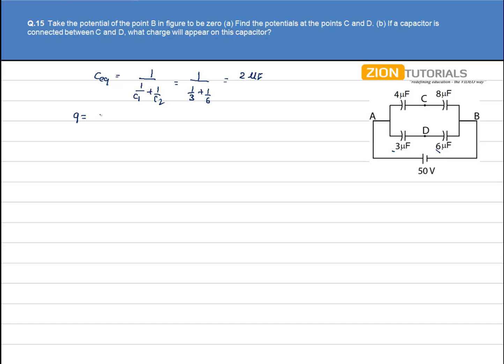Charge on each of the capacitors can be calculated by Q is equal to CV that is 2 into 50 that comes out to be 100uC. This is the charge on 6uF as well as 3uF.